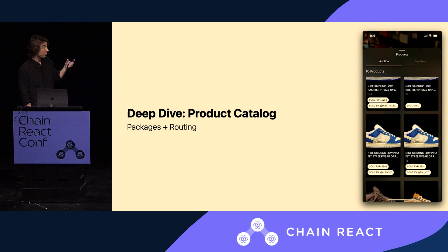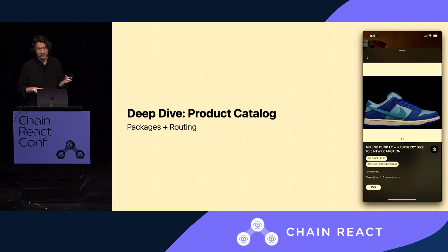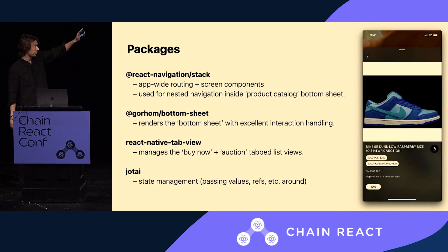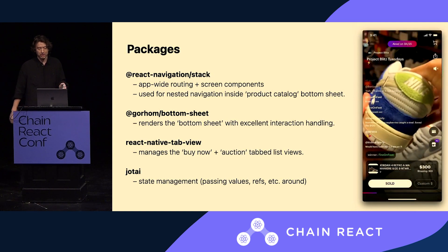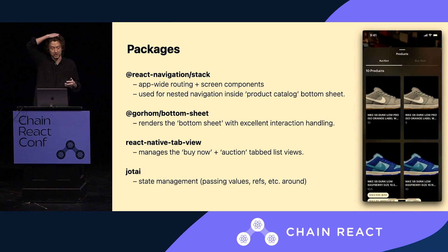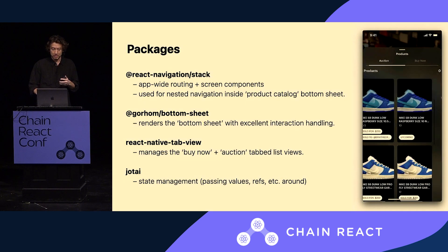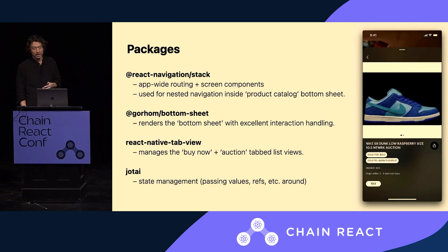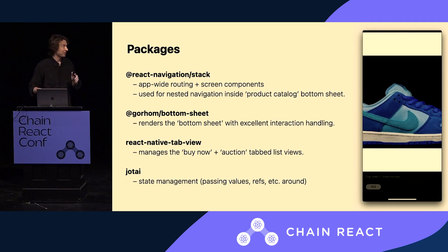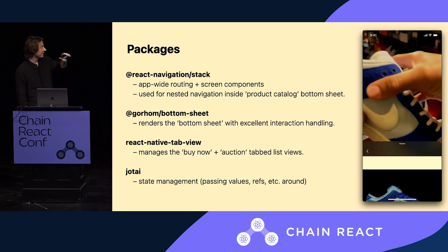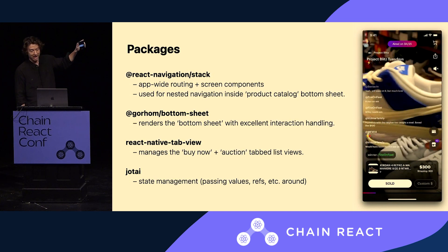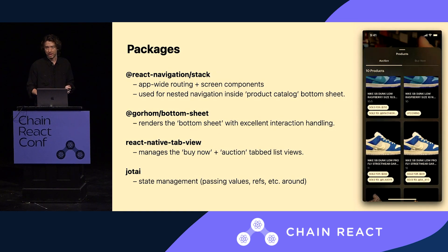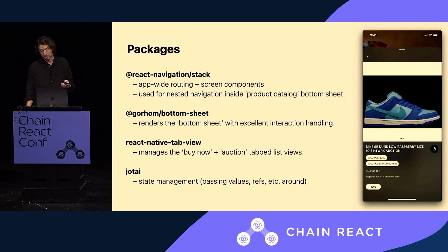We're calling this feature the product catalog, launched about two to three weeks ago. We're using four packages to power this sheet that appears in the video. We're using React Navigation — a decision made years ago that we've stuck with. We recently picked up a package called Bottom Sheet to handle the sheet that appears and renders all the content. We're using another package called Tab View to power the tab list view with Buy Now and auction list views. And we're using a state management library called Jotai, which is kind of a replacement for Redux, and that's been working out pretty well.